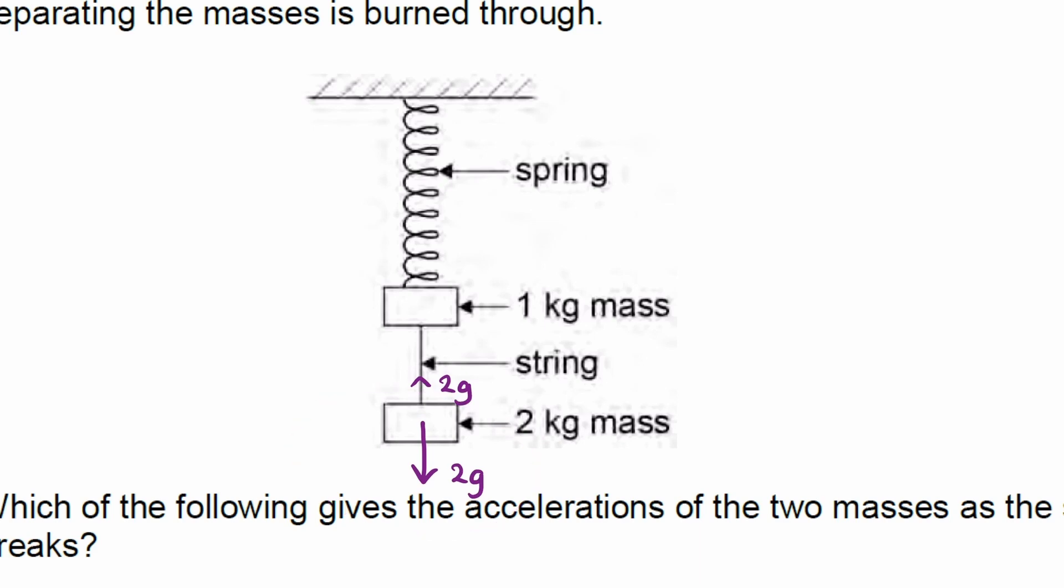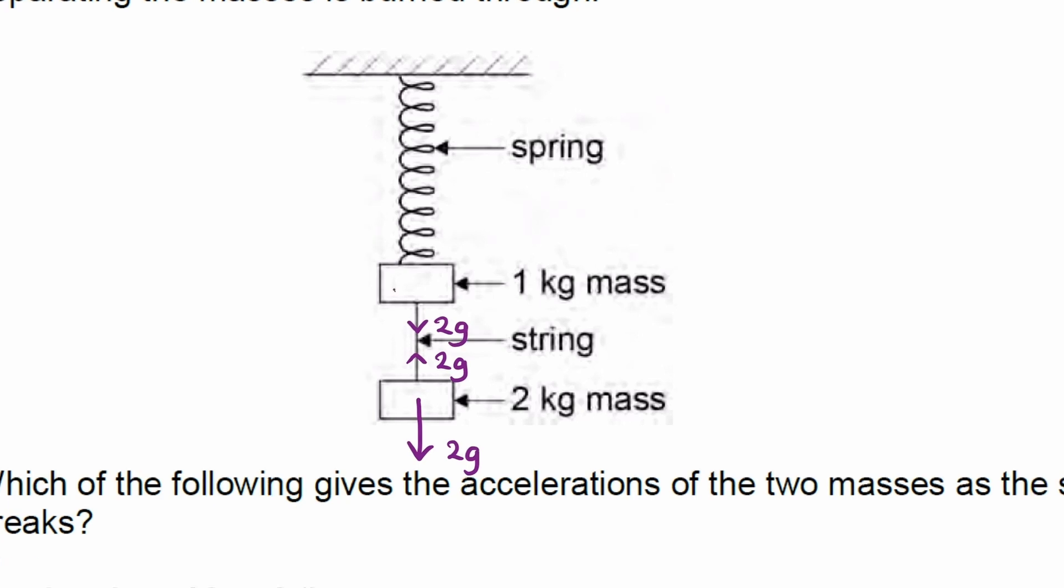Tension is the same throughout the string, so the tension up here will also be 2g. So the downward force on the 1kg mass, due to the string, will be 2g as well. And the 1kg mass also experiences its own weight, which I'll just draw to the left-hand side. It is acting in the middle, but just to make things clearer, I'll put it over here.